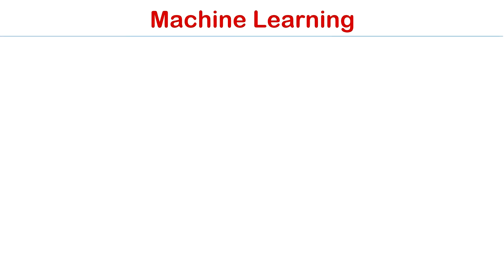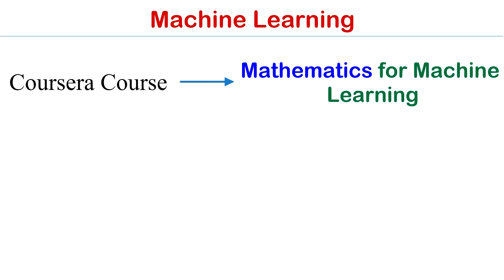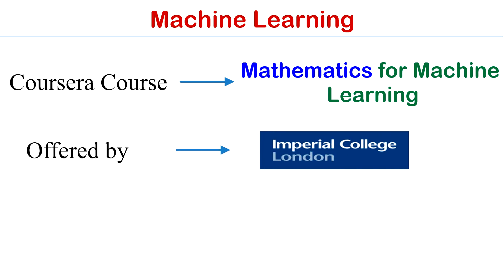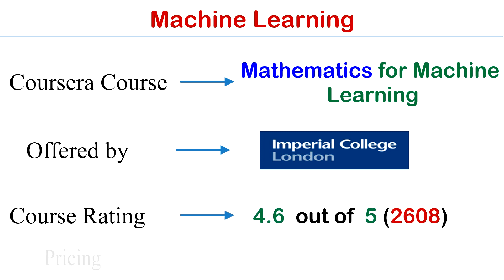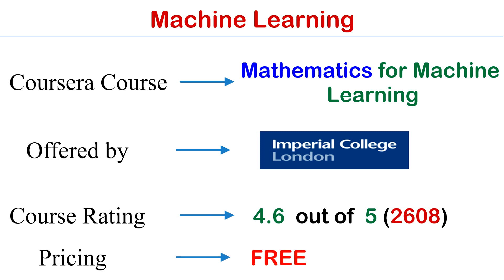Course number three is Mathematics for Machine Learning. This is offered by Imperial College London and the course rating is 4.6 out of 5. The price of this course is absolutely free and the link will be in the description box.